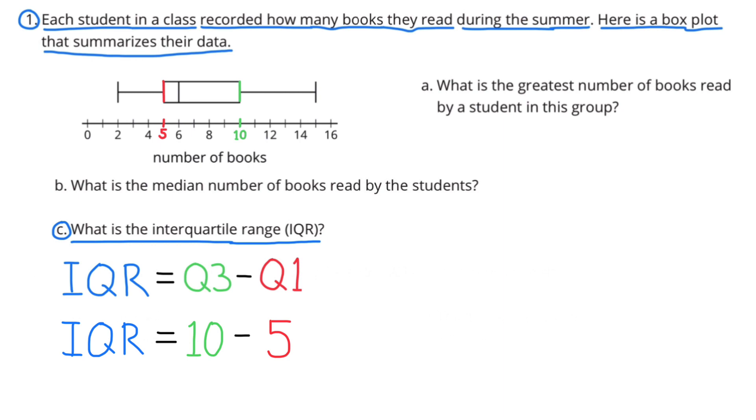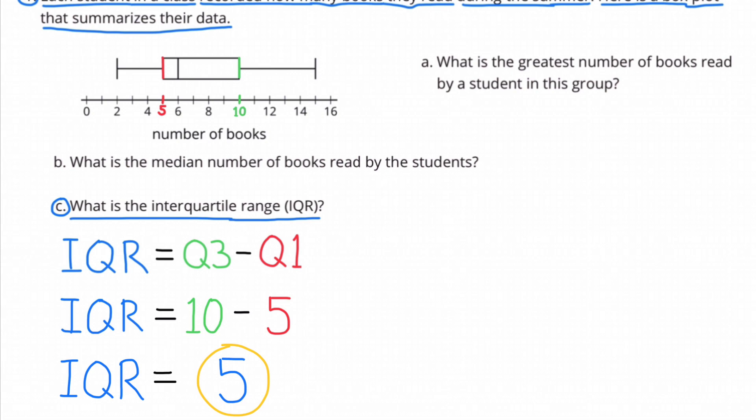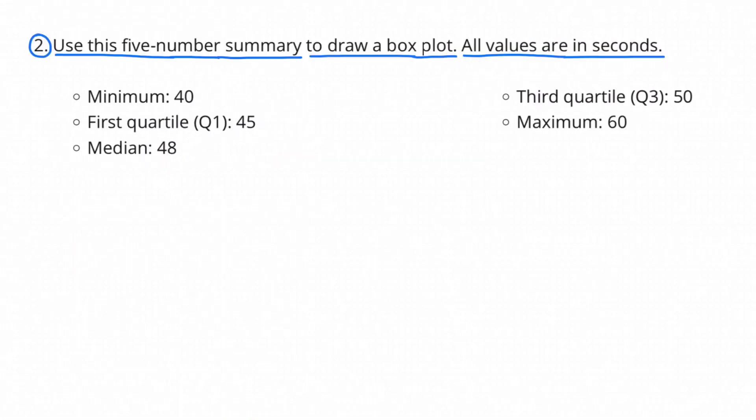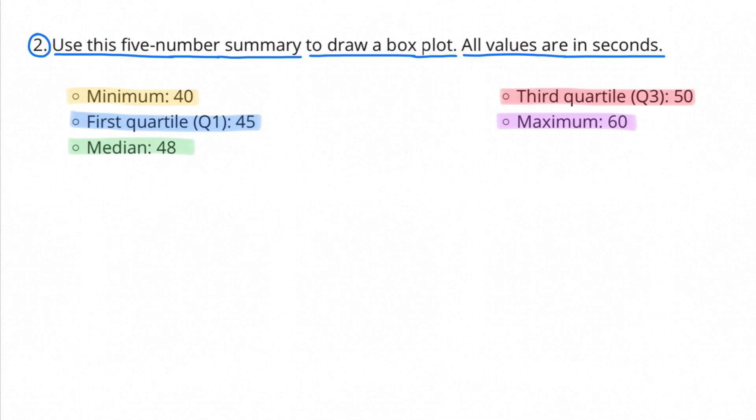Number two: Use this five-number summary to draw a box plot. All values are in seconds. Each item is highlighted in its own color that we need to make sure we include in our box plot. Now would be a good time to press pause and give it a try.